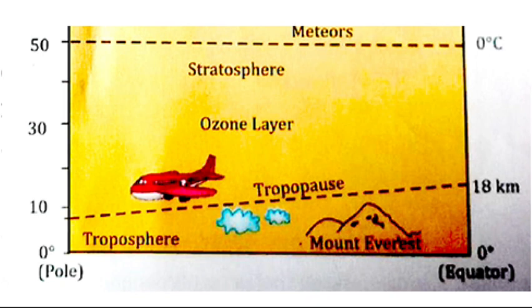The stratosphere contains the ozone layer that absorbs the sun's harmful ultraviolet rays. Just above the troposphere is the stratosphere, and the ozone layer is situated in this layer. It protects the earth from the harmful ultraviolet rays of the sun.